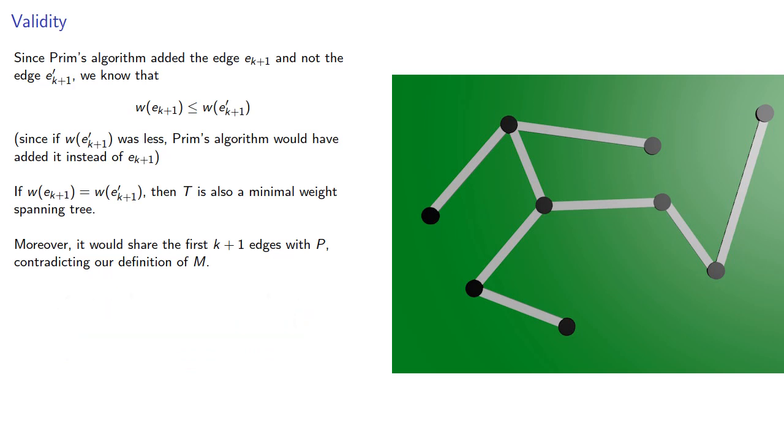And if the weight of the edge chosen by Prim's is less, then T itself has a lesser weight than M, which was supposed to be minimal.